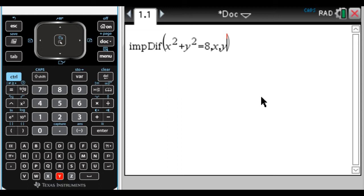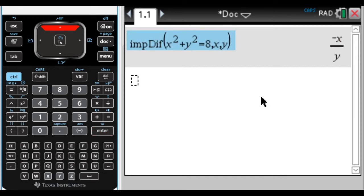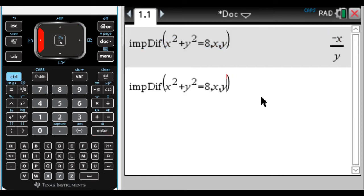Then if I press enter, it's going to find the first derivative, dy/dx. So dy/dx is negative x over y. But there's actually an optional argument here. It defaults to the first derivative, but if you do comma 2, it will actually find the second derivative.